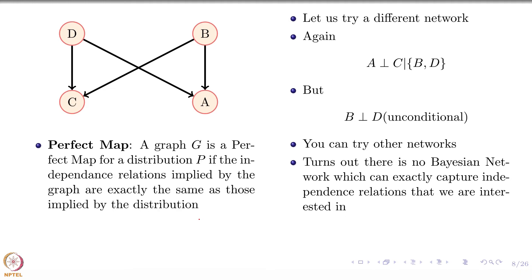That is the problem: for this distribution you do not really have a perfect map. A perfect map is an IMAP which has exactly the same independence relations as implied in the distribution — instead of a subset, you have equality. You cannot come up with a perfect map for this distribution, and this is just four random variables. If I cannot do this with four, imagine with 20, 30, 100, or a million. That is why Bayesian networks are not a solution for all kinds of independences or distributions that you might want to encode.